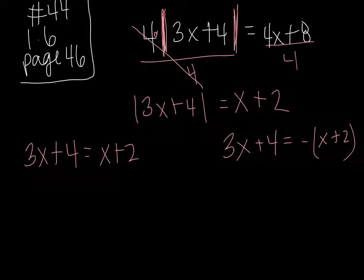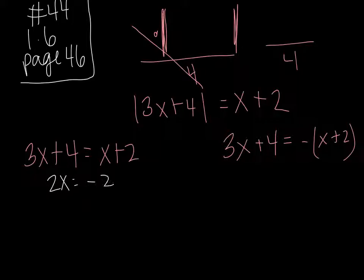Okay, now solve these equations. So this one right over here on the left, we would subtract x, subtract 4, we would have 2x is equal to negative 2, which means x equals negative 1. Here we'd distribute this negative sign, we'd have 3x plus 4 equals negative x minus 2.